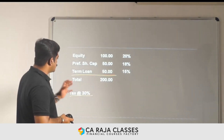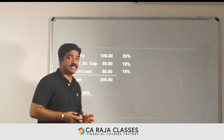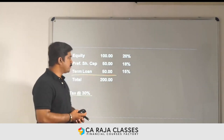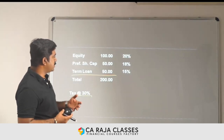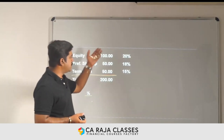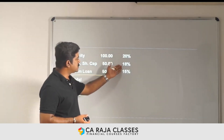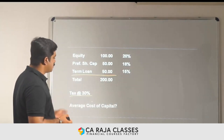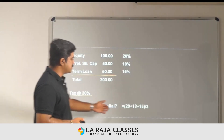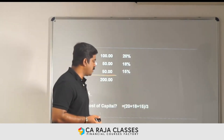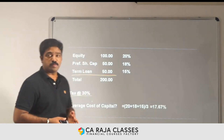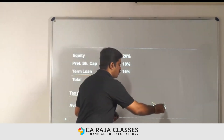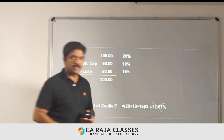With this information, if I ask you what is the average cost of capital for this company, many will say it is simply the average of 20 plus 18 plus 15 divided by 3 — something like 17.67%. But that is absolutely wrong. We cannot do it that way.